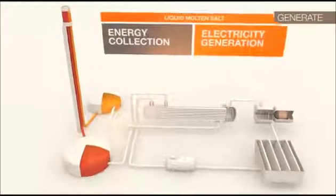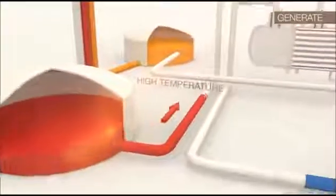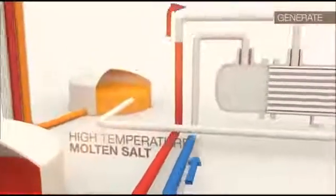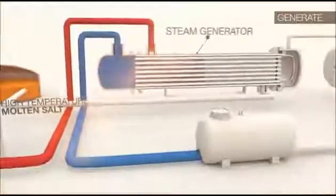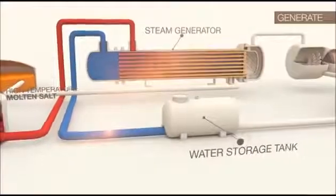When electricity is required by the utility day or night, the high temperature molten salt flows into the steam generator as water is piped in from the water storage tank to generate the steam.